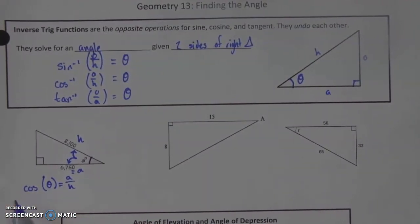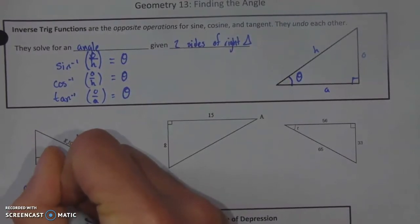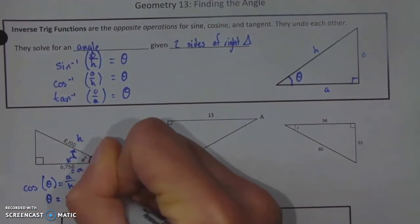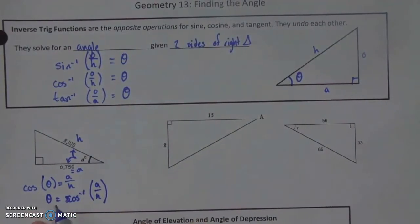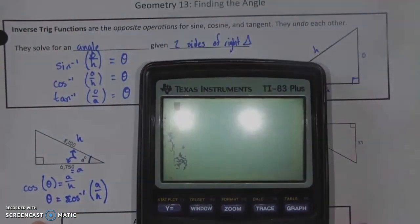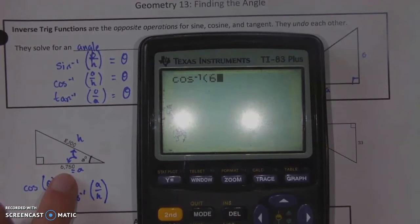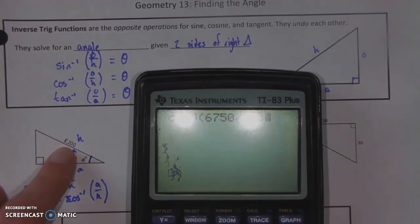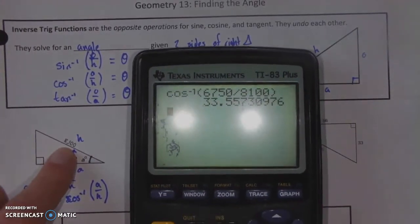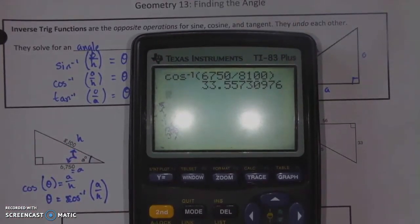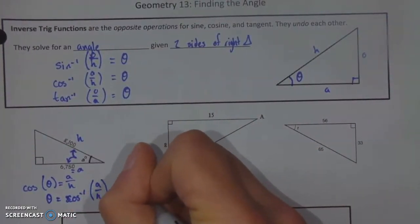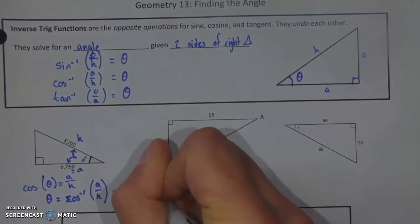I can undo this cosine by taking the inverse cosine of both sides, leaving me with theta is equal to the inverse cosine, cosine to the negative one, of A over H. This is a point where I can just fill it in. I want to fill in the inverse cosine in my calculator, so I got cosine to the negative one of A, which is 6750, divided by H, 8100. I can put that all right into my calculator, giving me an answer of 33.557. So that means theta is approximately equal to 33.557 degrees.